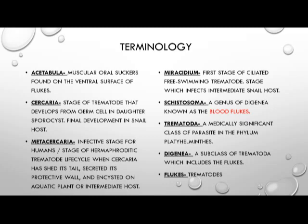The metacercaria is important to know as it is the infective stage for humans, and also the stage of hermaphroditic Trematode development when the cercaria has shed its tail, secreted its protective wall, and encysted itself on aquatic or intermediate hosts such as a predatory fish. The miracidium is the first stage of ciliated, free-swimming Trematode, and it is the stage which infects the first intermediate host, the snail. After going through developmental processes, it comes out as a cercaria from the first intermediate host.